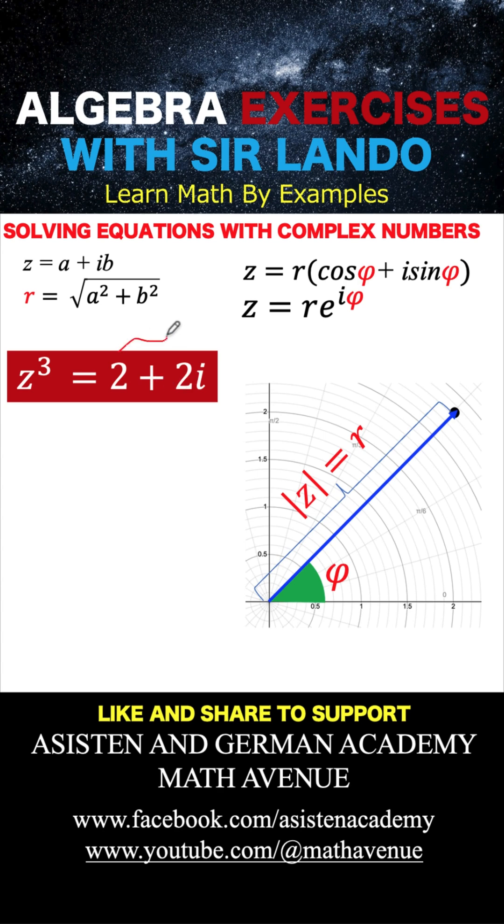Now, from here, we can compute for the radius because our a is 2 and our b is 2. Then the radius, therefore, is equal to the square root of 2 squared plus 2 squared, which is equal to the square root of 8. That is now our value of r. Then we need also to know what is the value of this angle phi.